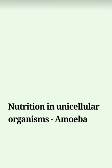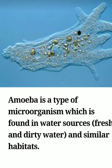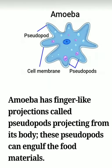Let us see how nutrition in unicellular organisms takes place, using amoeba as an example. Amoeba is a microorganism mostly found in water sources. Amoeba has finger-like projections called pseudopods which project from the body surface, and these pseudopods can engulf food particles — meaning completely taking them inside.